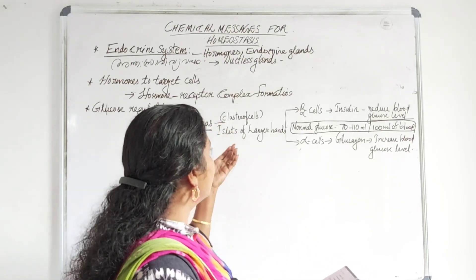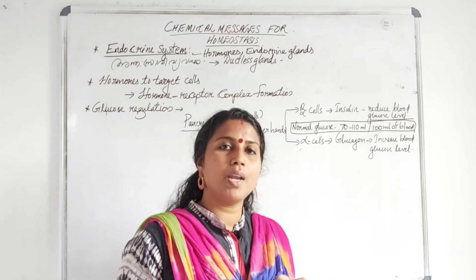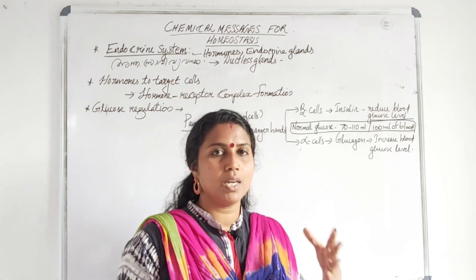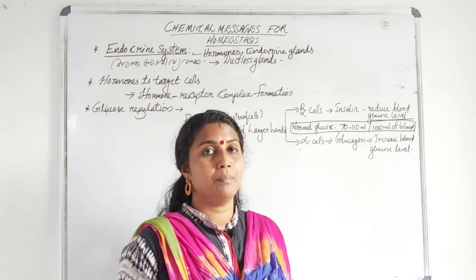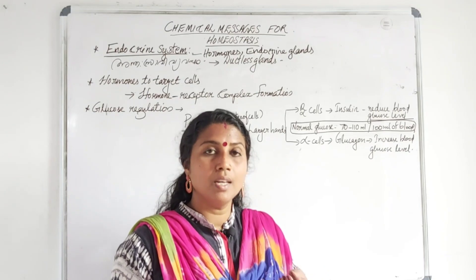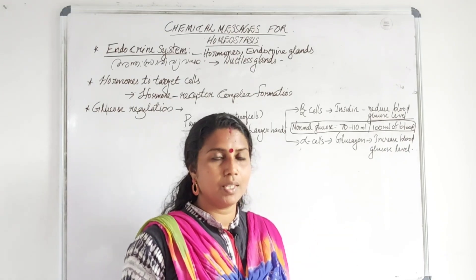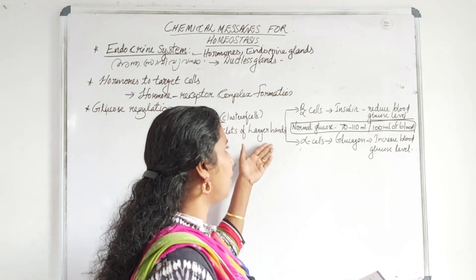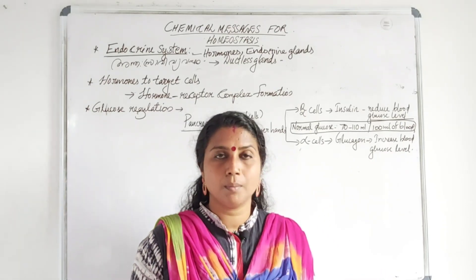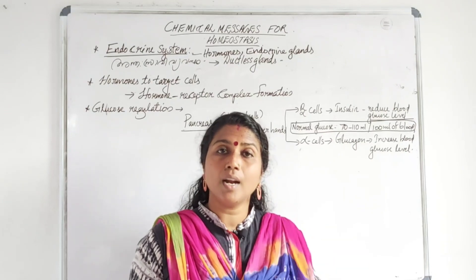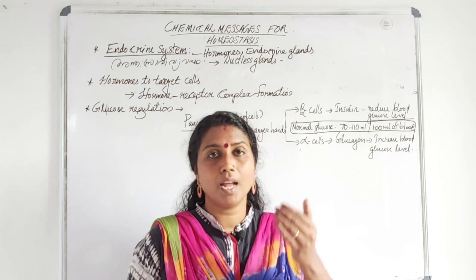The pancreas has a special cluster of cells called the Islets of Langerhans. The Islets of Langerhans contain two types of cells: beta cells and alpha cells.